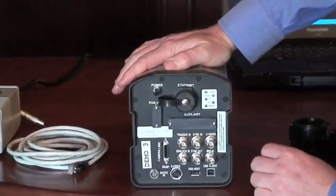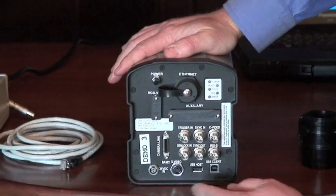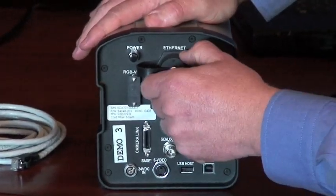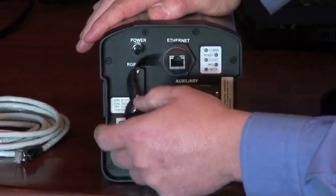If we take a look at the back of the camera, the main connections are the 24VDC power in and the gigabit ethernet connection right here. It's just a protective cap on it.